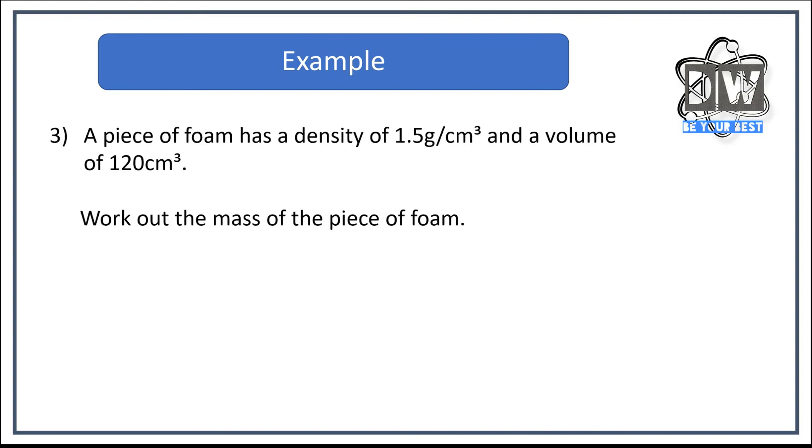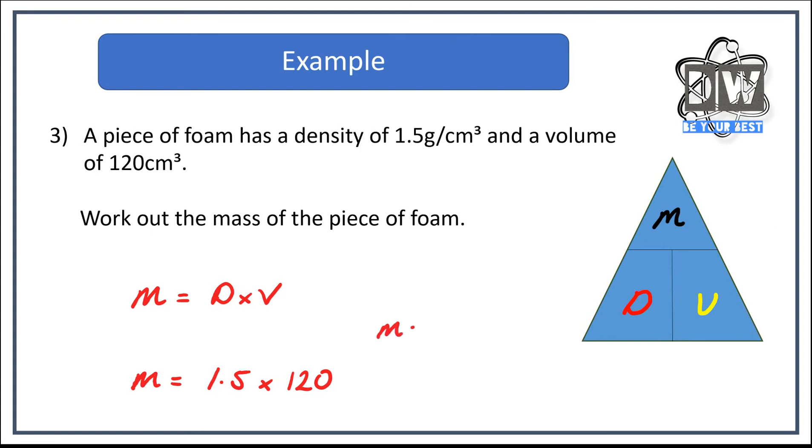Hopefully you had some time to do that. Let's look at our formula for a start. So mass equals density times volume. We write that down. We take away our density, our density at D, and we put in our density value. We take out the V and we put in the volume value. Then we work it through. So we've got mass equaling 1.5 times by 120. Sorry, 120, not 200. We work that through and we end up with mass equaling 180.